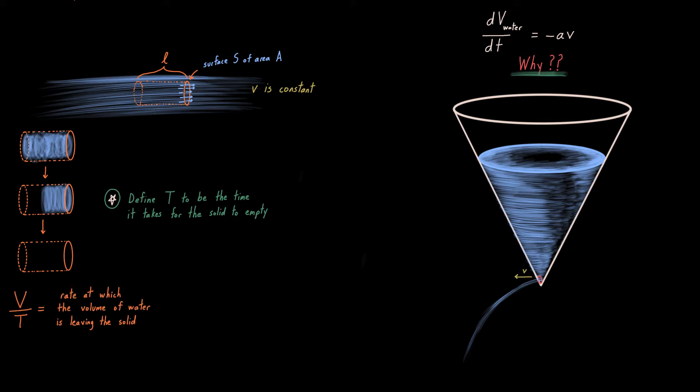But logically this is the same thing as the rate at which the volume of water is leaving, because lowercase v is constant. Conceptually this is also the same thing as saying the rate at which water volume is leaving through S, because the only way to leave the solid is to leave through S. And finally, this is the same thing as saying the rate at which the blue cloudy cylinder is shrinking.